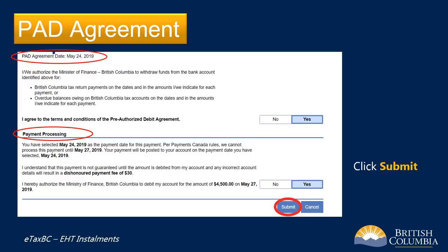Below the pre-authorized debit agreement are your payment processing details. You'll see the processing dates for your payment. Click Yes to authorize the Ministry to debit your bank account for the installment payment.